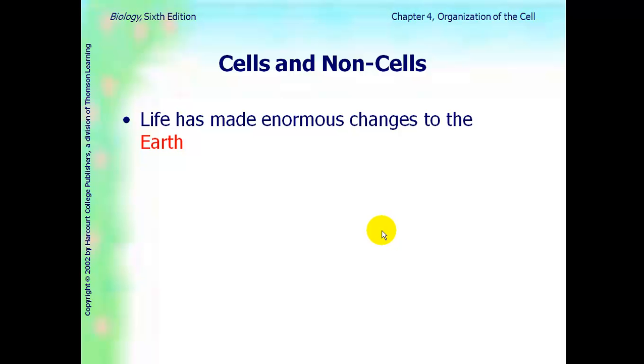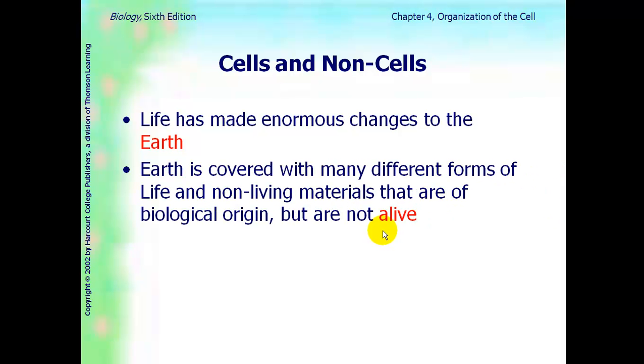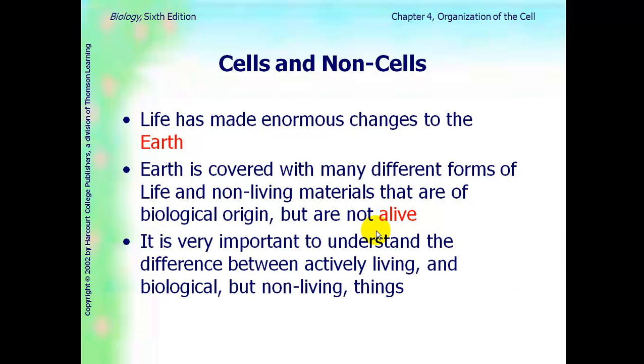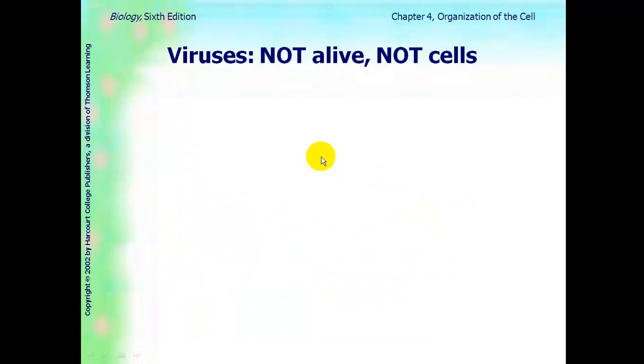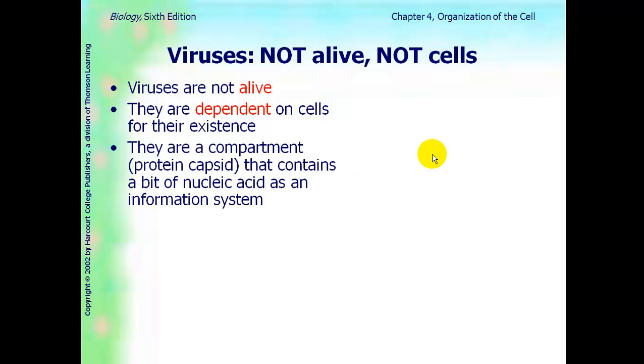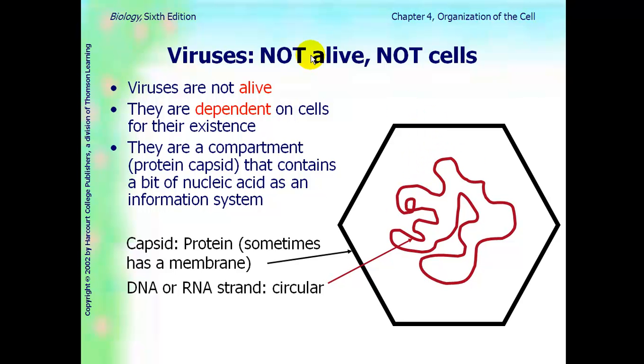Cells and non-cells. Life has made enormous changes to the earth. The earth is covered with many different forms of life, and there's non-living materials that are of biological origin, but they are not alive. It is very important to understand the difference between an actively living cell and a biological but non-living thing. Living things are made of cells always. You need to have at least one cell in order to be considered a living thing. Viruses are not alive. They are not made of cells. When we do a whole unit on viruses, but they are not alive because they don't contain cells. They actually contain chemicals. But they are dependent on cells for their existence. They have a protein capsid compartment that contains a bit of a nucleic acid, like DNA or RNA, as an information system. Here's a picture. The capsid is what's around it. And then inside is a DNA or RNA strand.